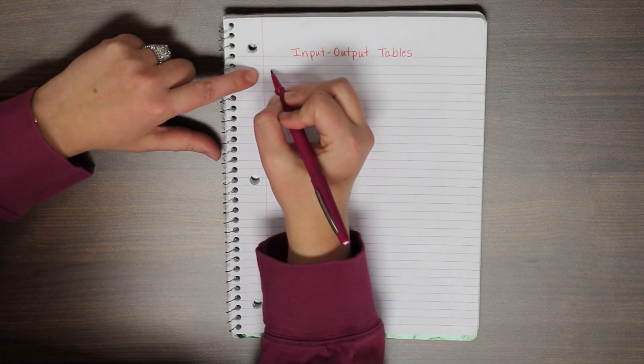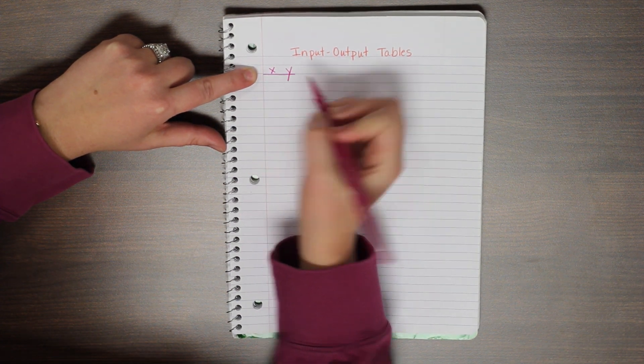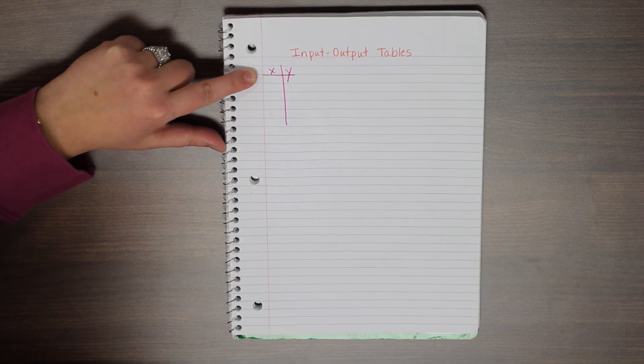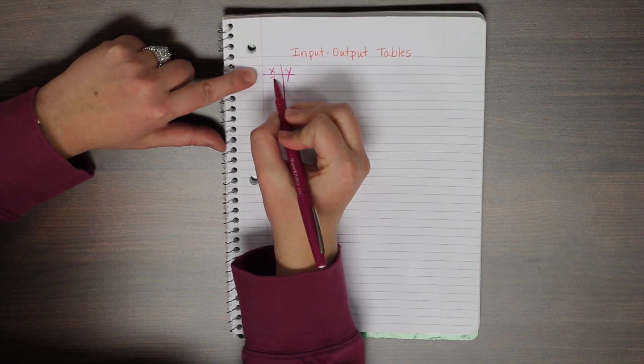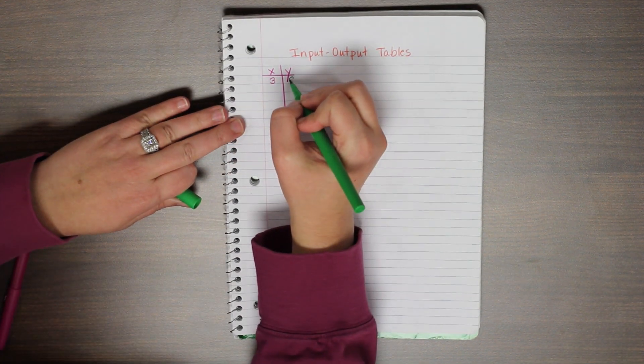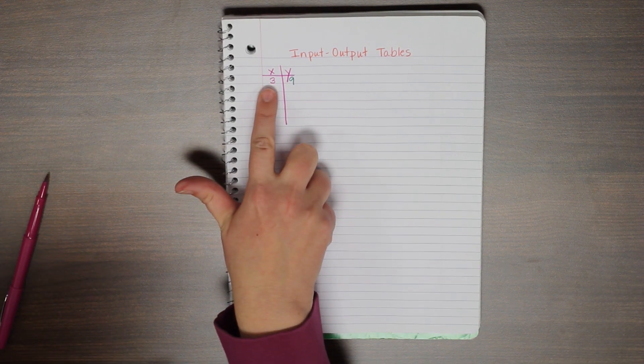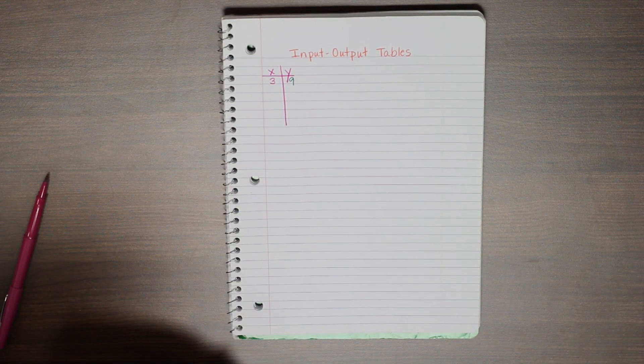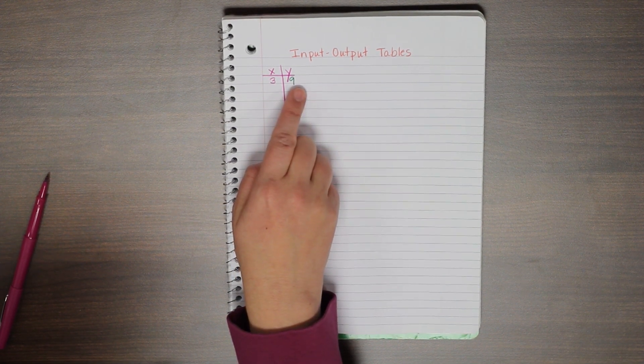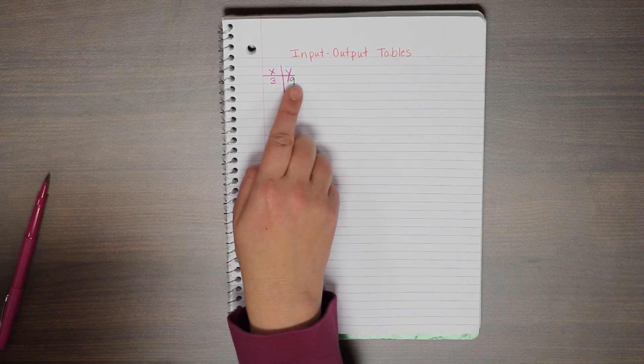So let's look at our first one. If I have x and y, and let's say that I have my first value of x is 3 and my first value of y is 9. Let's think about this for a minute. What is the relationship between 3 and 9? Well, some people may say, I know 3 times 3 is 9, and I also know that 3 plus 6 is 9, and both of those are true.